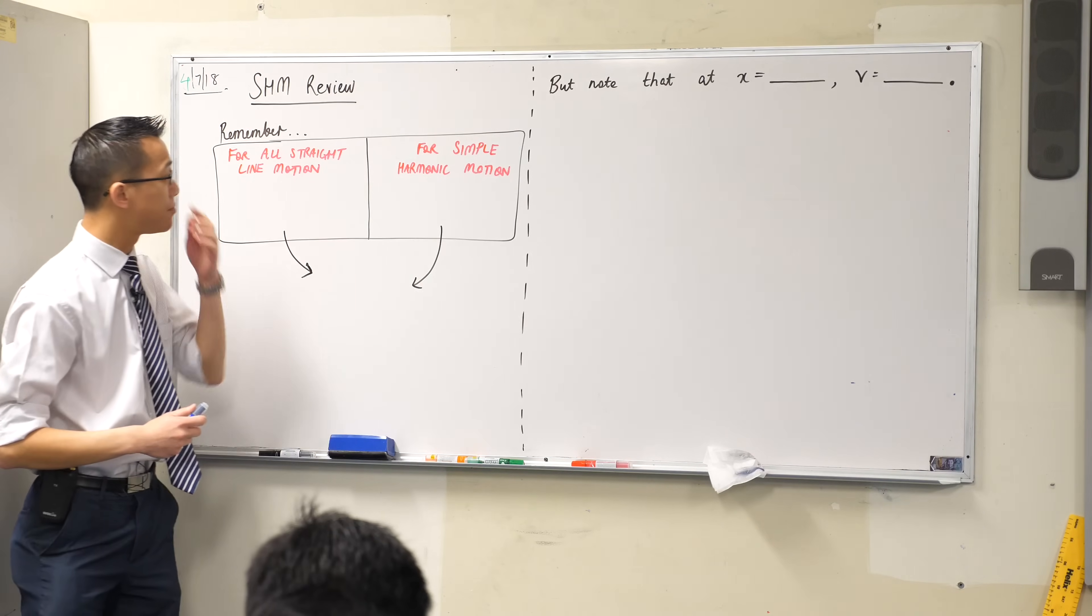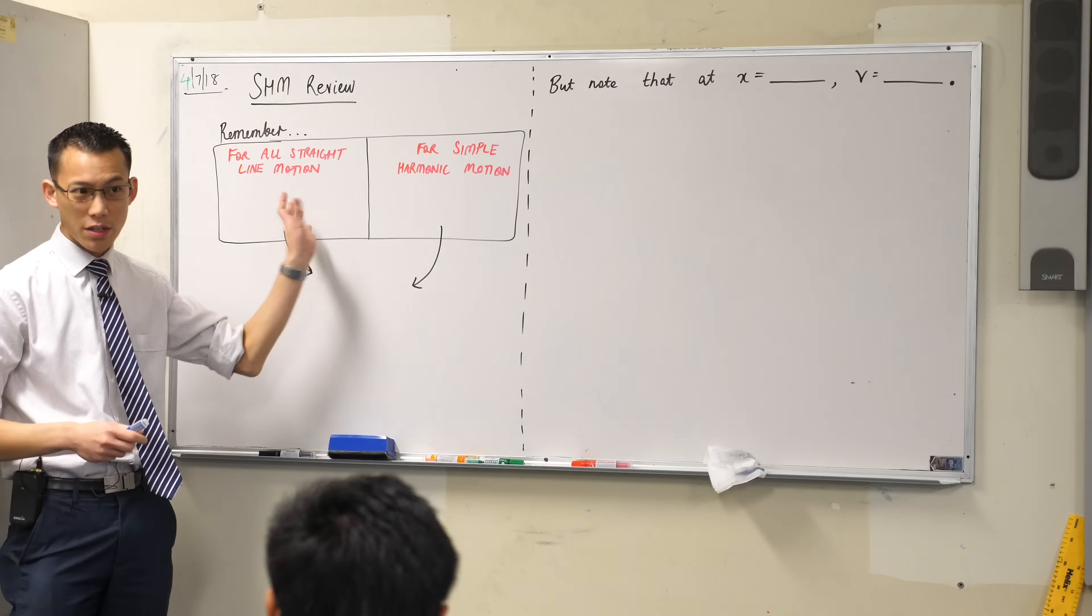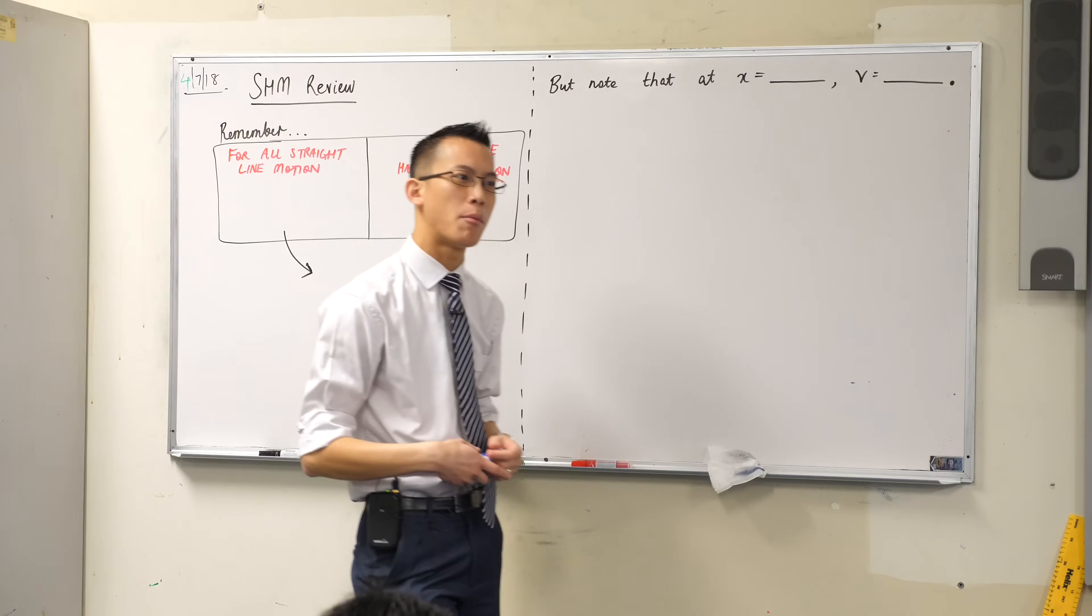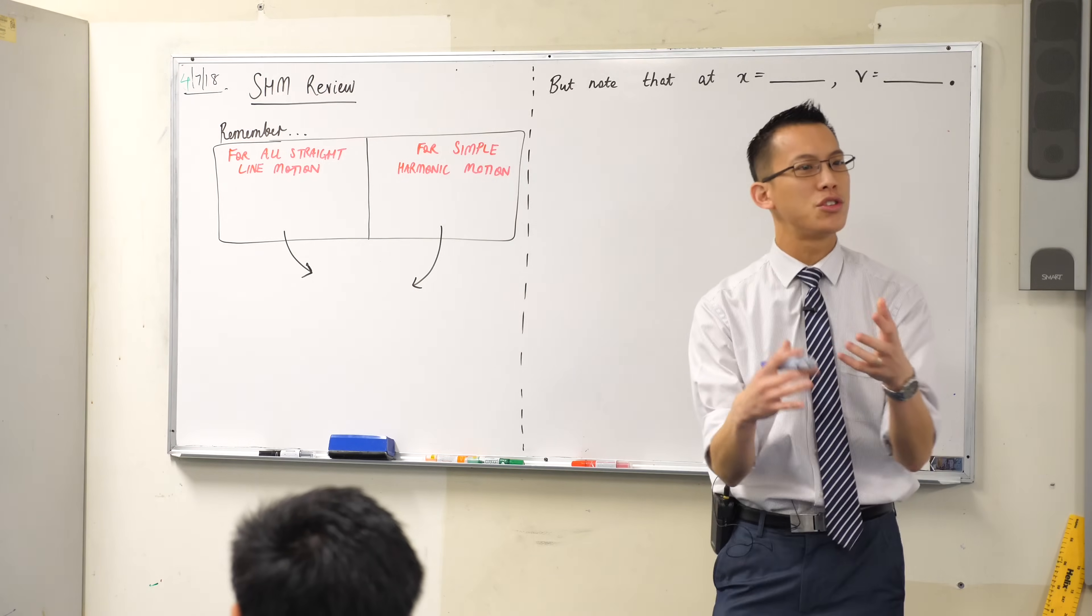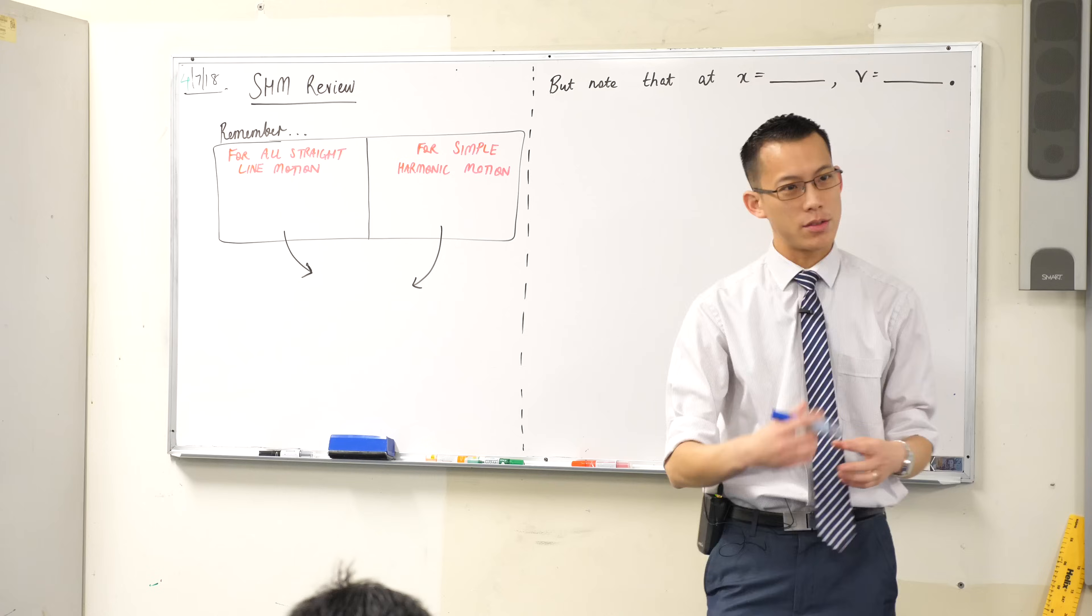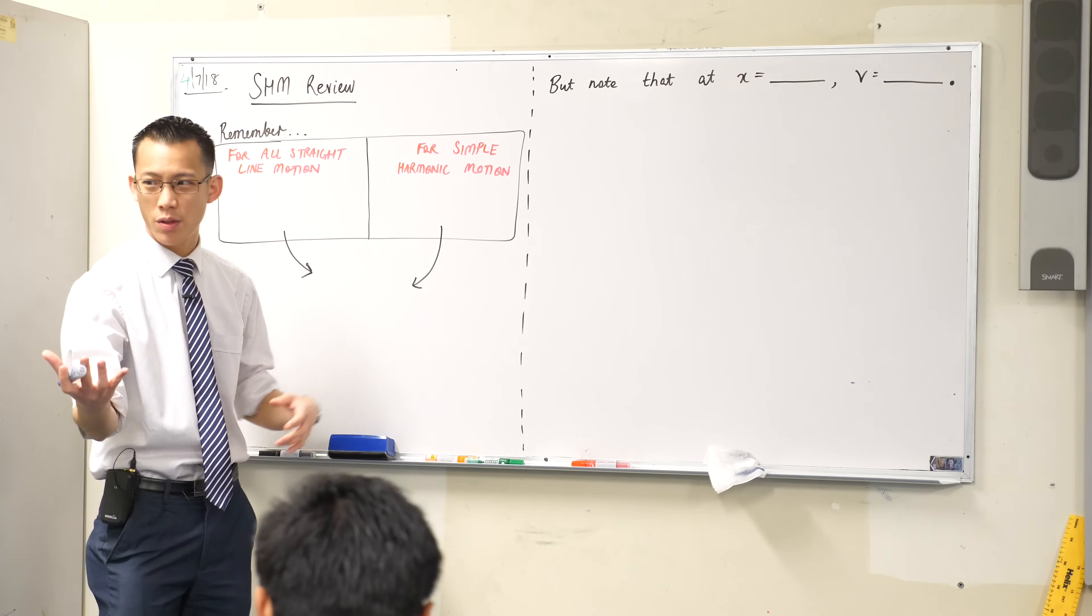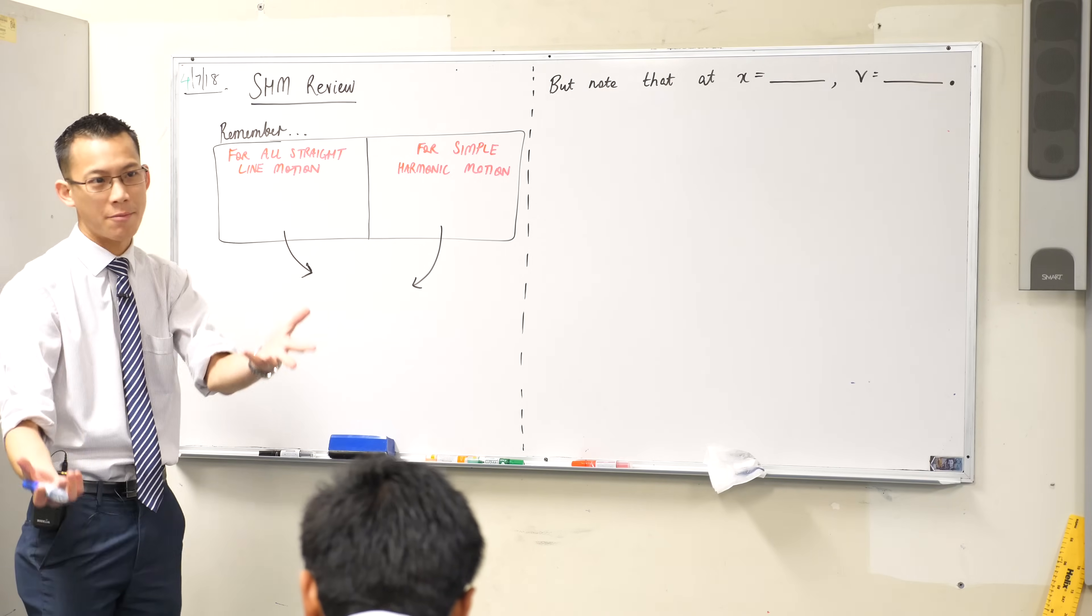In simple harmonic motion, one of the most confusing parts is you've got all these different ways to get into a simple harmonic motion question and sometimes you don't know which way you should use, or sometimes when you look at a question it wants you to go a particular way but you're not very comfortable with that. So you try another way and it just doesn't work out.